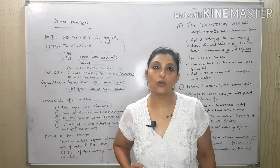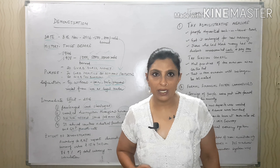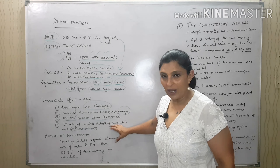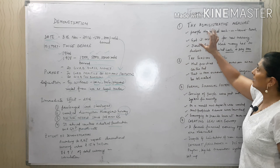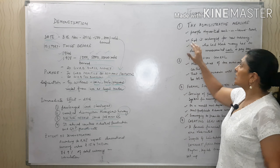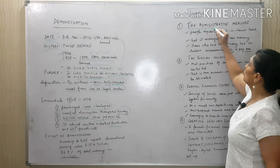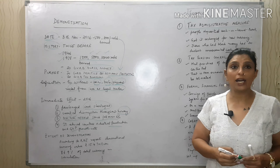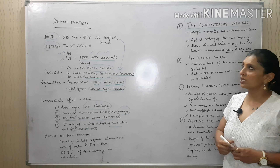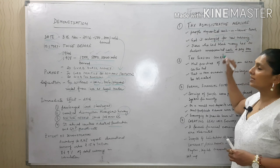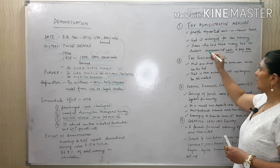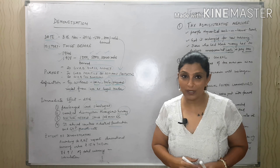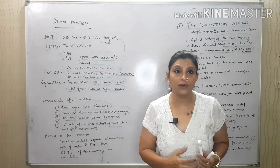According to the RBI, around 15.5 trillion rupees — that is 86.9% of the total currency in circulation — was deposited into banks. We are not entirely sure whether we were successful in curbing black money. Now, regarding the features of demonetization: first, it was a tax administrative measure. People started depositing cash in hand into banks, wanting new currency in exchange for old.